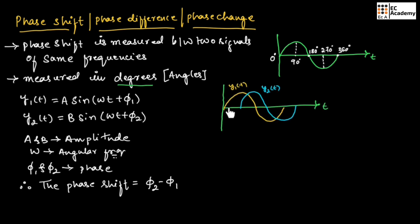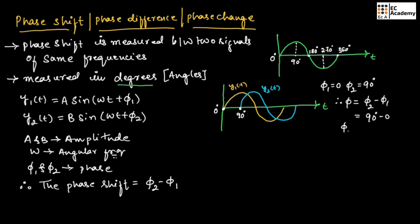Now let us consider two signals, y1(t) and y2(t). The starting point of the first signal is at 0 degrees and the starting point of the second signal is at 90 degrees. So we can say φ1 is equal to 0 and φ2 is equal to 90 degrees. Therefore, the overall phase shift between these two signals can be given as φ2 minus φ1, which equals 90 degrees minus 0, giving an overall phase shift of 90 degrees.